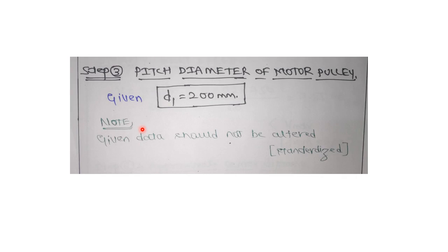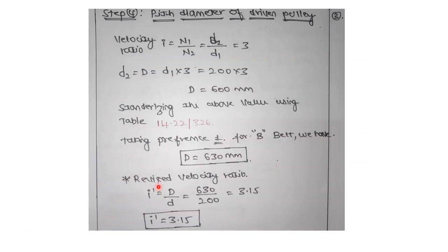Step 3: the pitch diameter of the motor pulley (driver) is directly given as 200 mm — do not standardize or alter this given value. For the driven pulley, using the velocity ratio of 3, the diameter = 3 × 200 = 600 mm. This is a calculated value, so standardize it using table 14.22, page 326. Taking preference 1 under B belt, the standardized value is d = 630 mm.